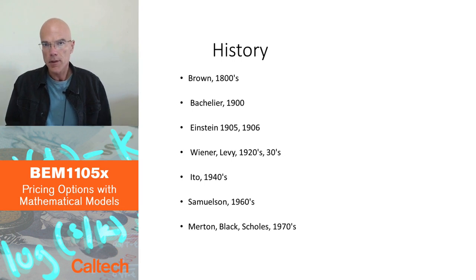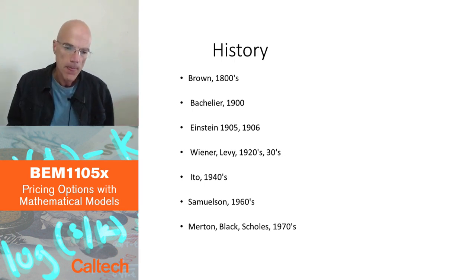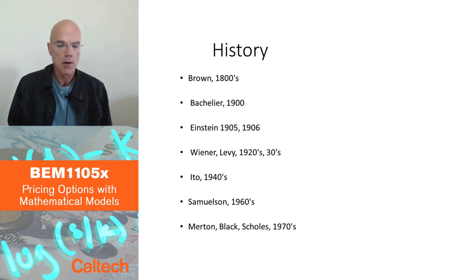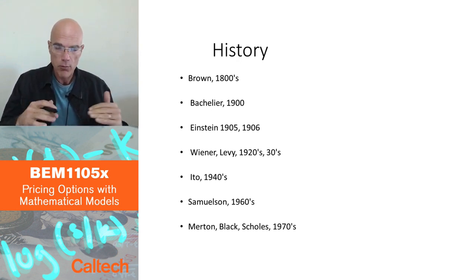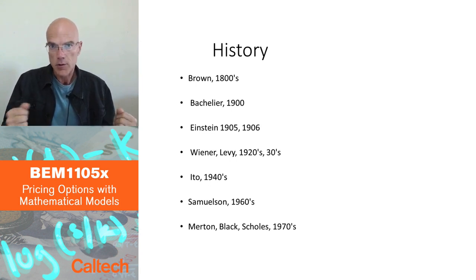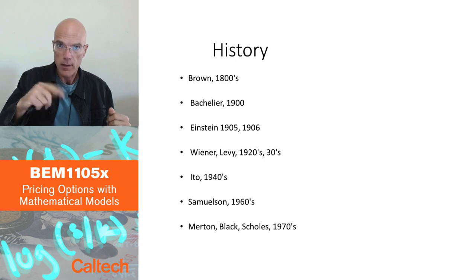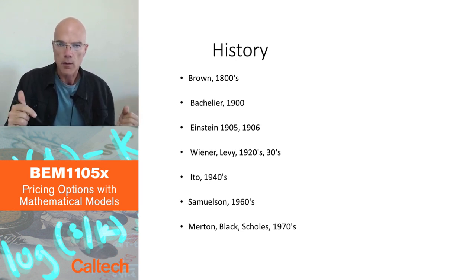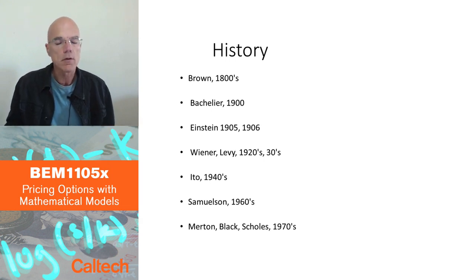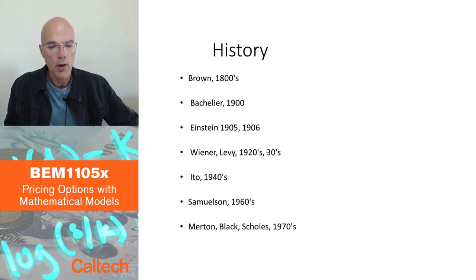Just a little bit of history to give you a perspective. The name comes from a biologist, Brown, who in the 1800s was studying the movement of molecules in liquid, which was a very irregular movement. The stochastic process which was later developed and which is called Brownian motion will also have very irregular movements. But really, Brown didn't have any mathematical model — he was just considering this movement of molecules.